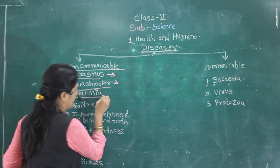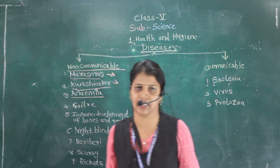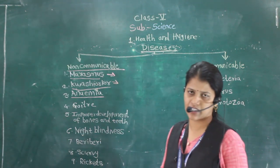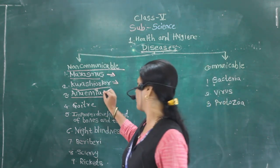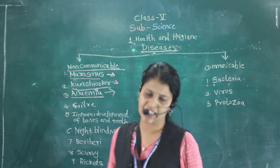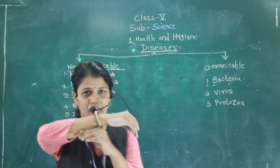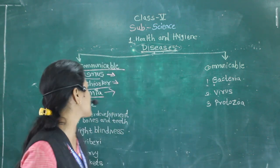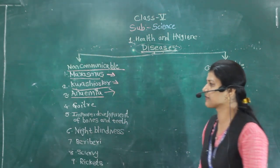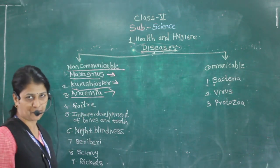Next is anemia, caused due to the lack of iron. Symptoms include extreme fatigue, weakness and pale skin — the skin becomes totally pale. If the person is suffering from anemia, they should be given eggs and pulses.